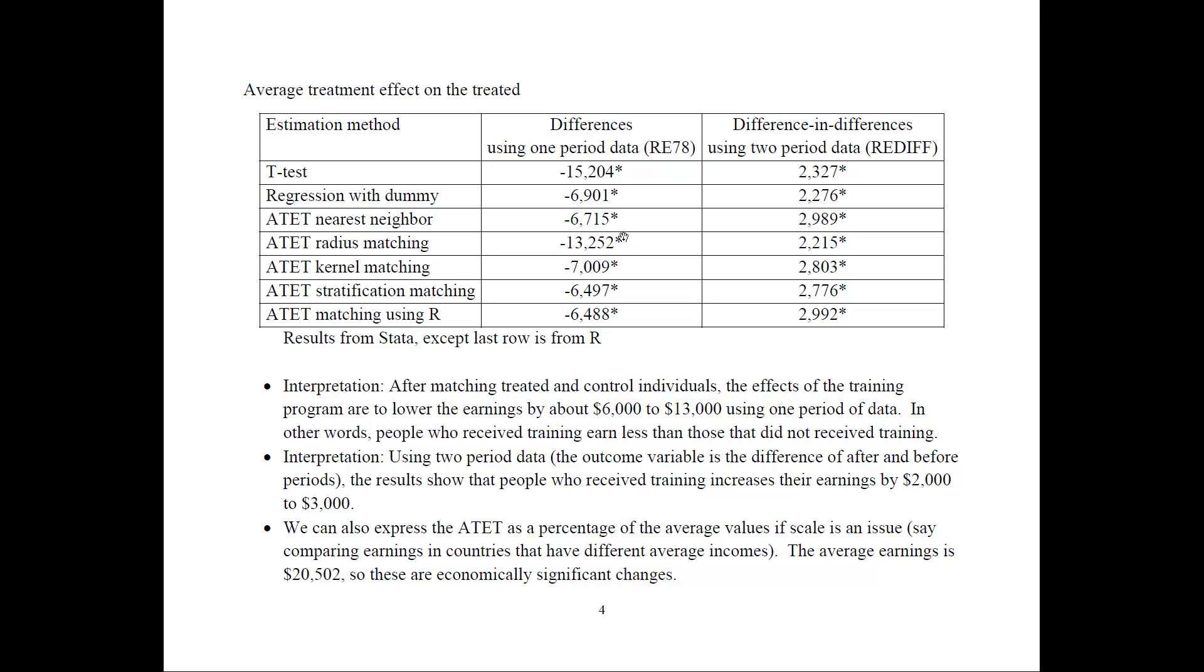The interpretation is that after matching treated and controlled observations, the effects of the training program are to lower earnings by about $6,000 to $13,000 using one period of data. In other words, people who receive training would earn less than those that did not receive training. This is kind of counterintuitive. That's a bad result, right? You're receiving training and yet you're earning less.